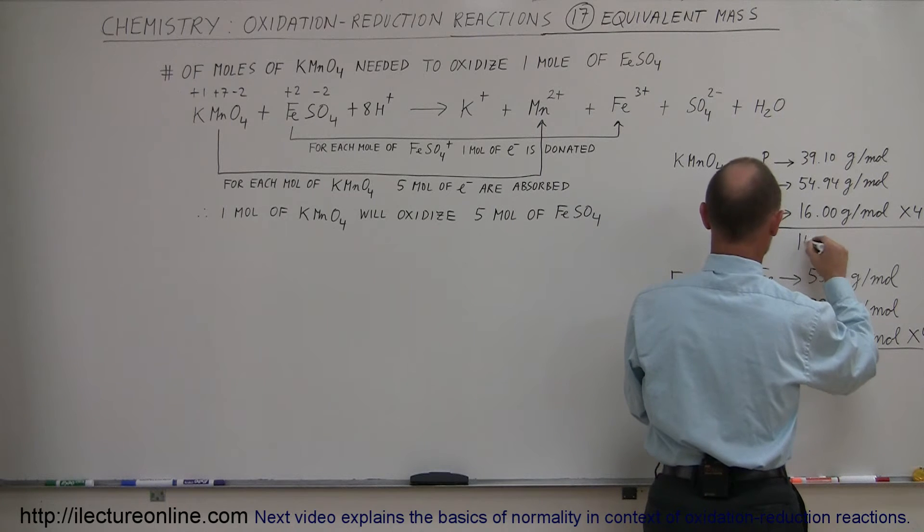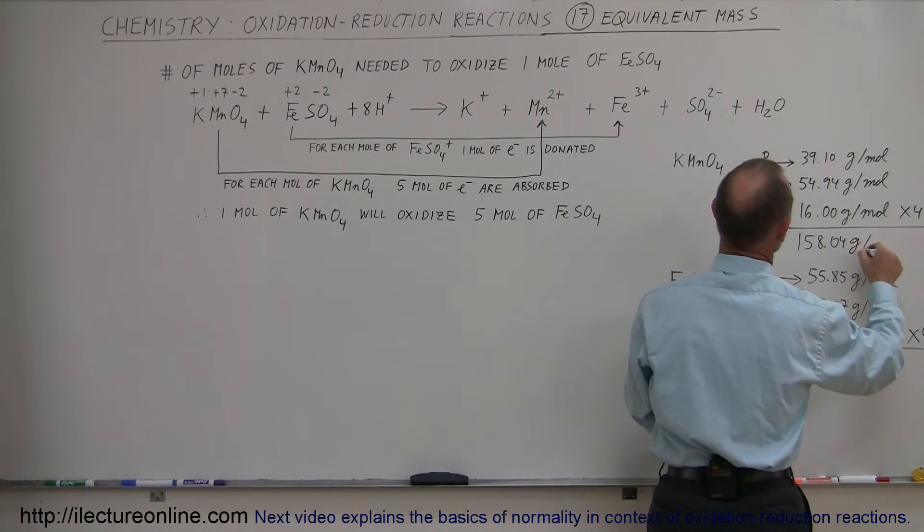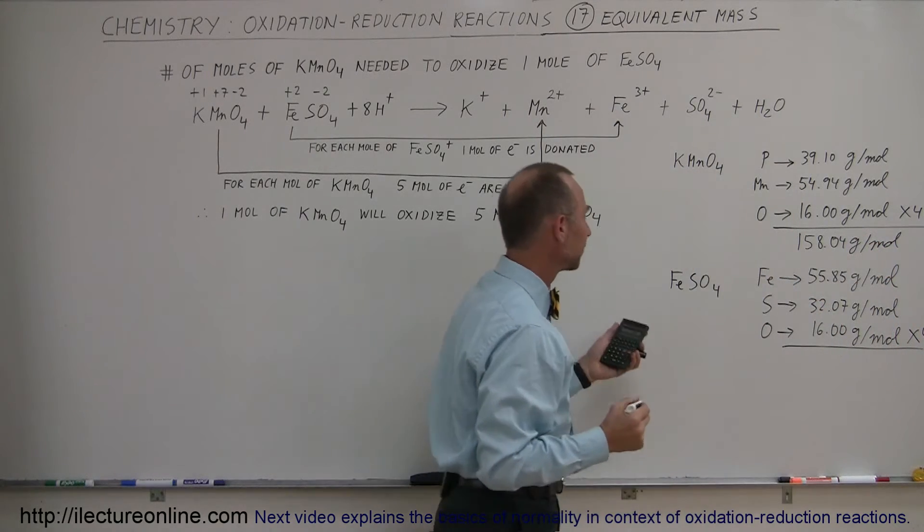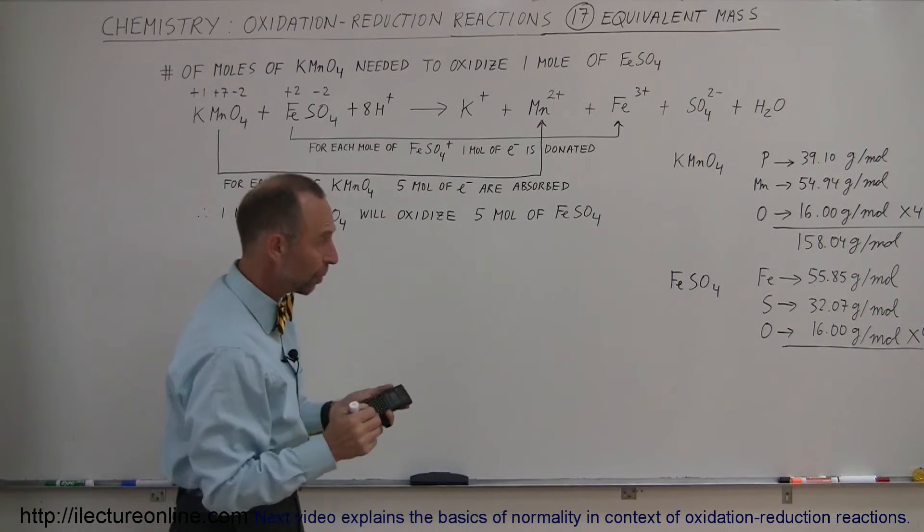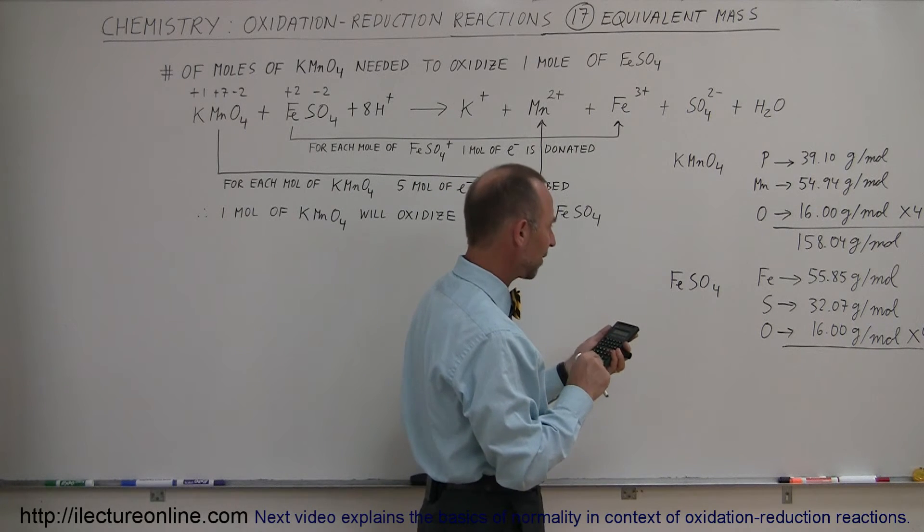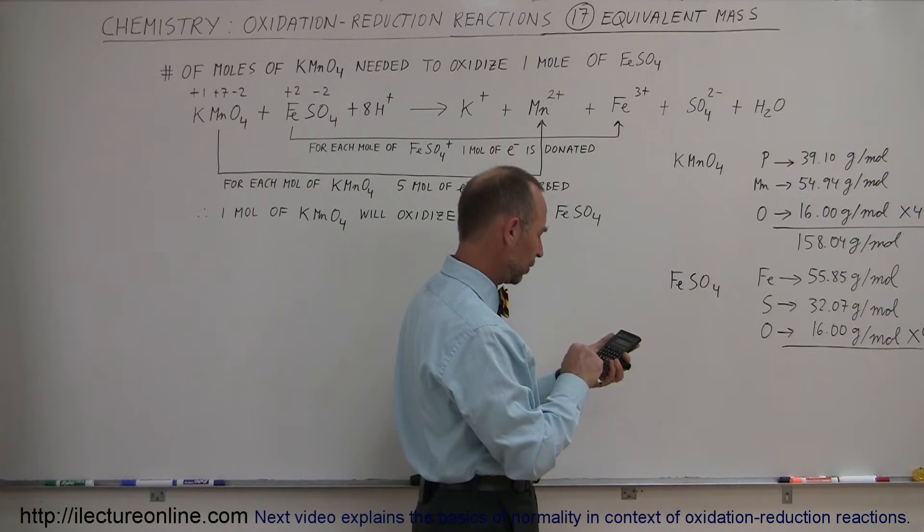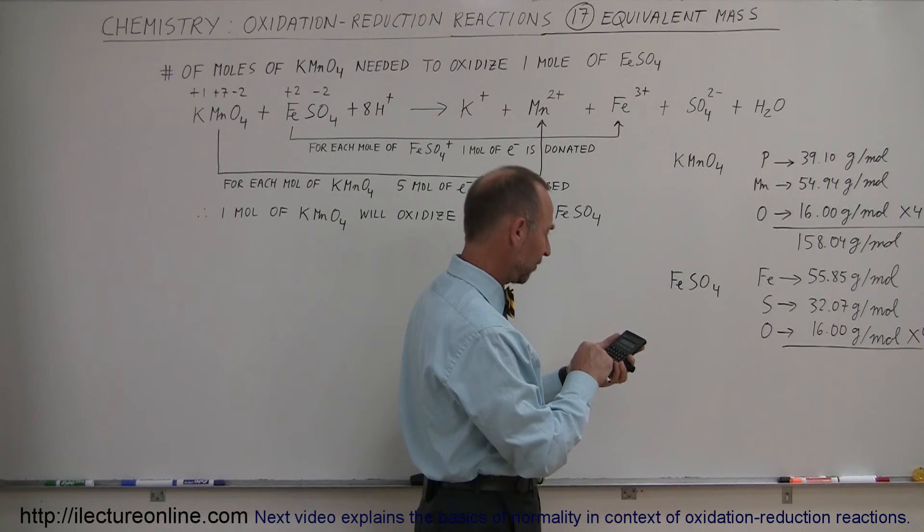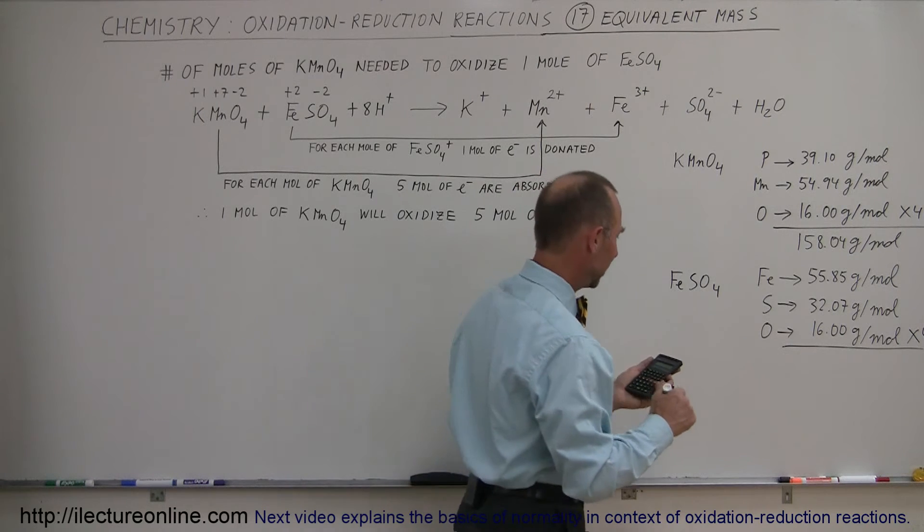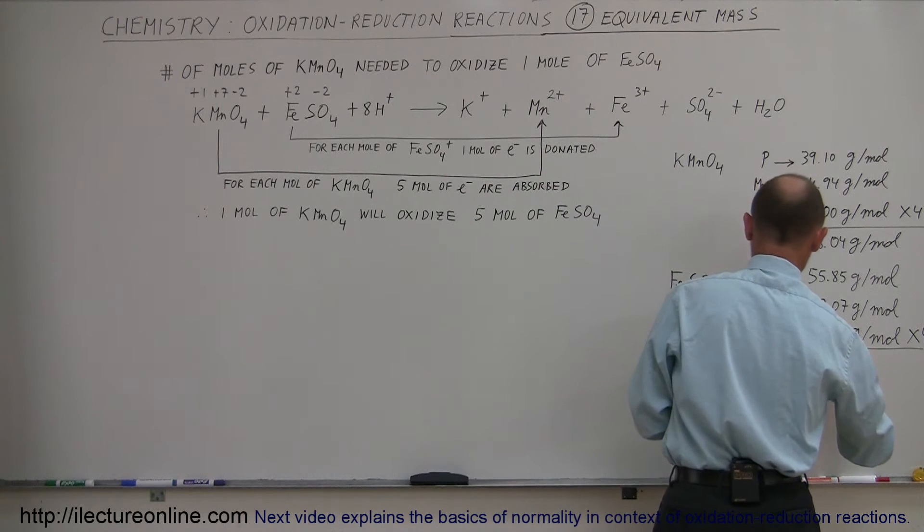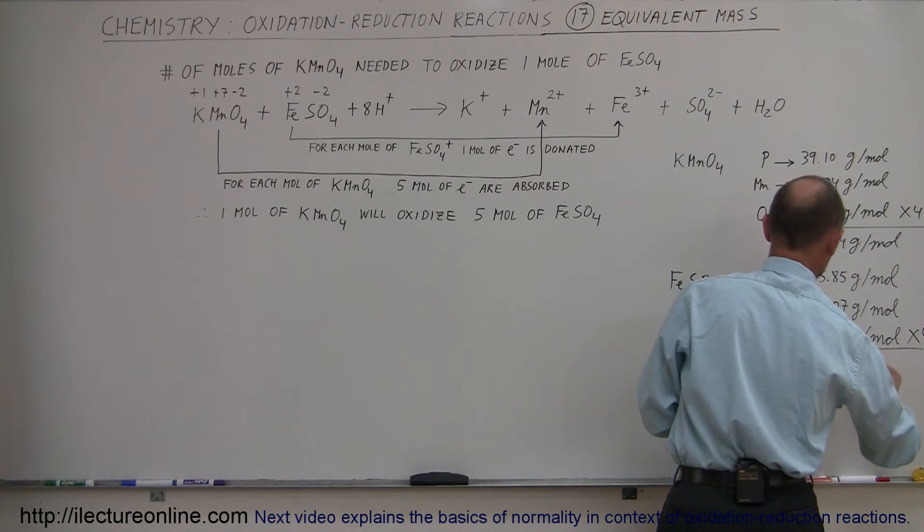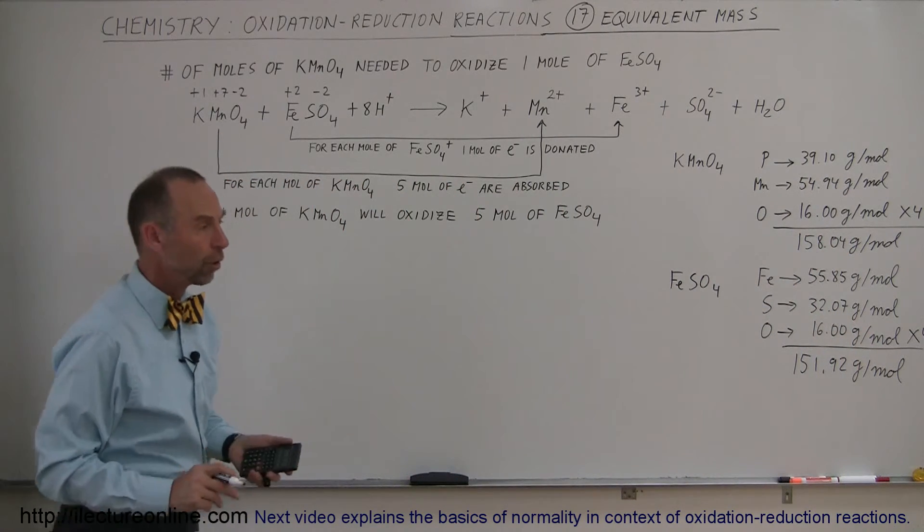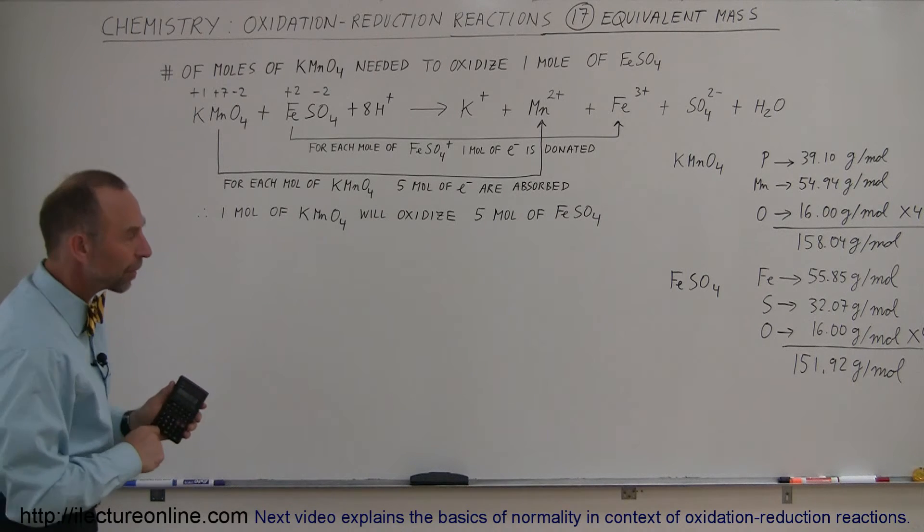For the iron sulfate, what's the molar mass? We have 64 grams of oxygen plus 32.07 grams for the sulfur plus 55.85 grams for the iron, so we have 151.92 grams per mole. That's the molar mass for iron sulfate.